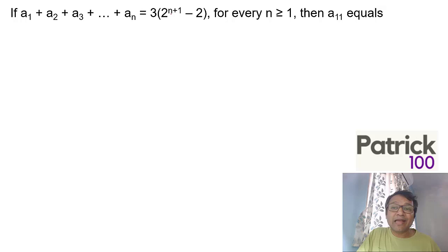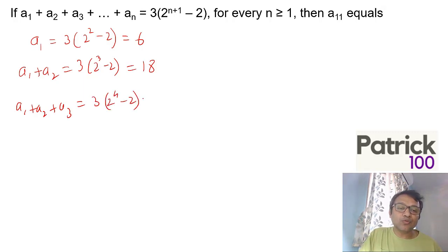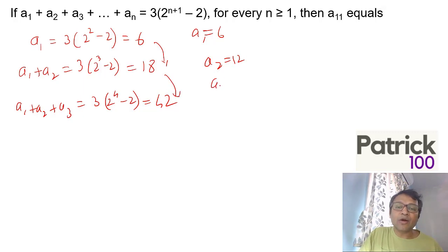A₁+A₂+A₃...+Aₙ = 3(2^(n+1)-2). For every n≥1, then Aₙ equals - we can put n=1 first and try. Put n=1: A₁ = 3(2²-2) = 6. Put n=2: A₁+A₂ = 3(2³-2) = 18. A₁+A₂+A₃ = 3(2⁴-2) = 42. So A₁=6, A₂ is the difference, which is 12, A₃ is 24.